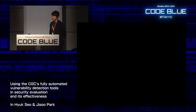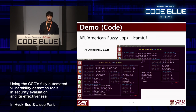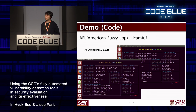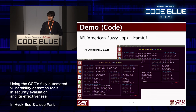For the demo, I installed AFL on OpenSSL 1.0.1a for the Heartbleed vulnerability. But after running it for two weeks, no crash was generated, so I just attached a screenshot.